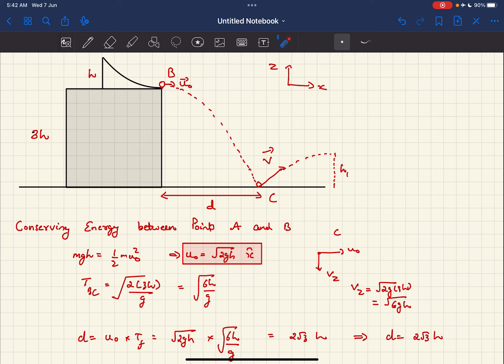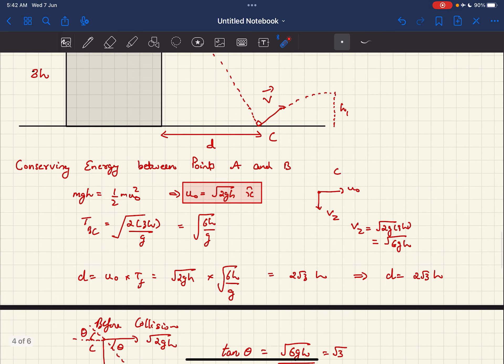Now, the vertical velocity, when this ball reaches point C before this collision, is √(2GH'), which is √(6GH) because the height is 3H in this case.